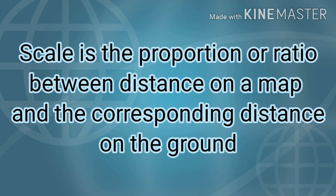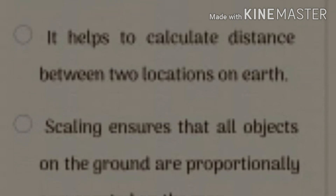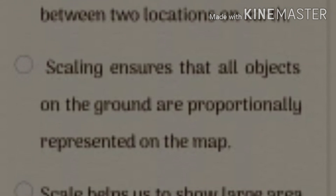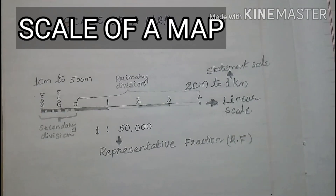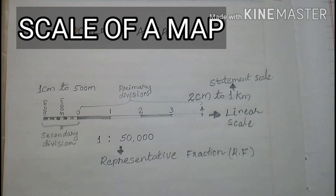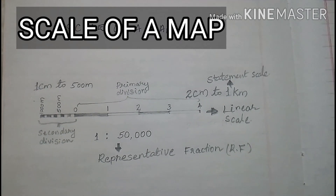There are three different methods to represent the scale of a map. What are the advantages of using scales in a map? It helps to calculate distance between two locations on earth. Scaling ensures that all objects on the ground are proportionally represented on the map. Scale helps us to show a large area of the ground accurately on a small piece of paper. Scale is the relationship between distance on the earth and distance on the map.